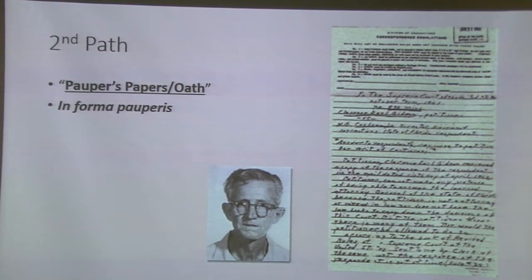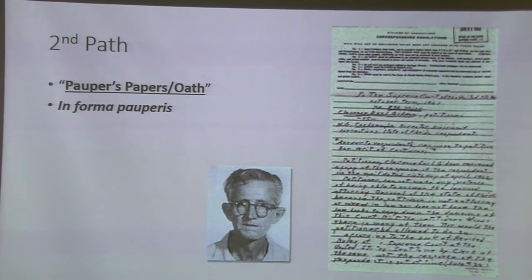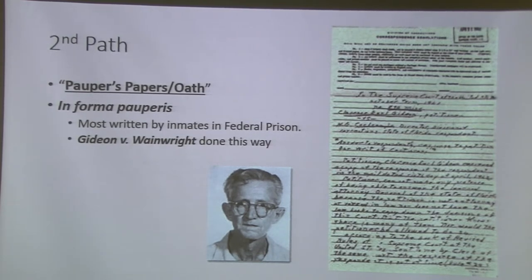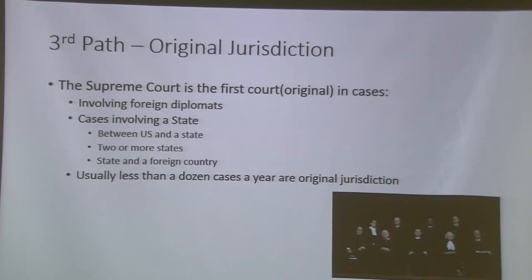The second path is the Pauper's Petition. Gideon v. Wainwright is our example for this one. This is where we know the system favors people with more wealth, but this gives a chance to those without. A lot of times it is handwritten petitions by people in federal prison, though it doesn't have to be. Very few cases come through this way, but Gideon v. Wainwright may be the most famous.